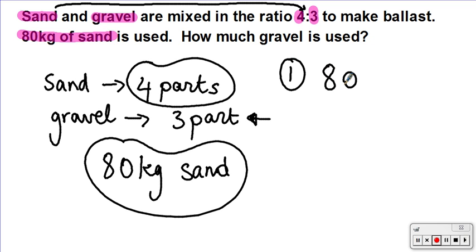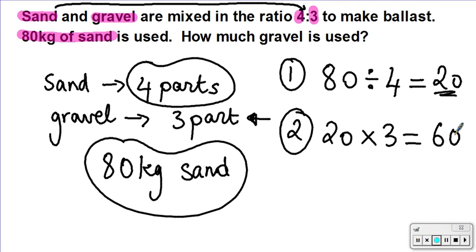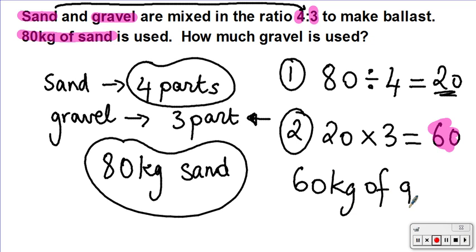Step one: I'm going to do 80 divided by 4. I'm dividing 80 kg of sand by 4 because the four is for the sand — 80 divided by 4 equals 20. Step two: I'm going to take that answer of 20 and multiply it by the number of parts for gravel, which is three. That gives me 60, so we need 60 kg of rubble.